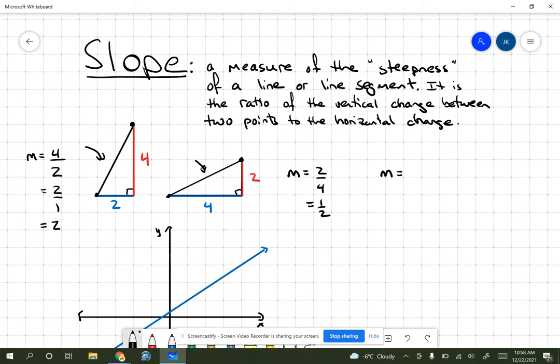So slope, one way of thinking about it is it's the rise over the run. It's a very common way of looking at it, where this is the change in the vertical distance over the change in the horizontal distance. We're going to talk a little bit more about that a little bit later.